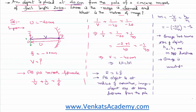The image is of the same size as the object but inverted. So the nature of the image is: same size as the object, inverted, and it is a real image. In summary, if an object is kept at the radius of curvature of a concave mirror, its image will be of the same size, inverted, and real. Thank you for watching — keep coming back for more video lessons.